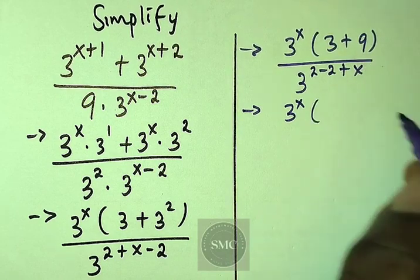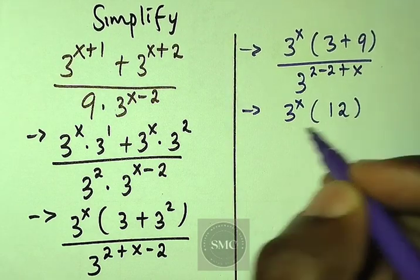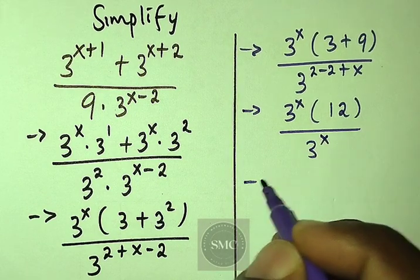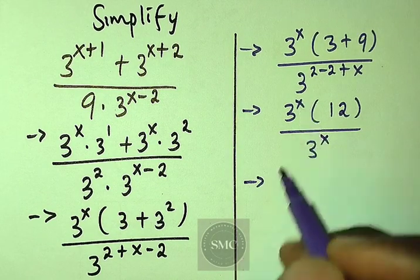And 3 plus 9, that is 12, over 3 to power x. Then 2 minus 2 cancel, we have 3 to power x left. Finally, 3 to power x cancels with this 3 to power x, I'm going to be having 12.